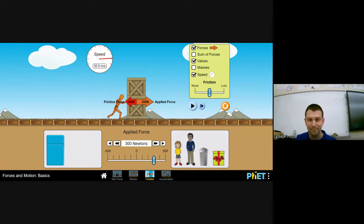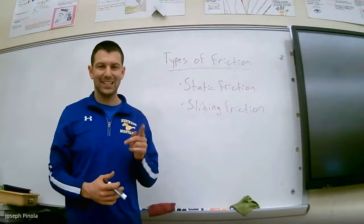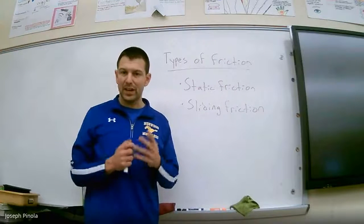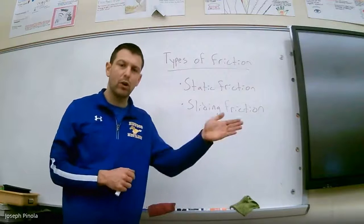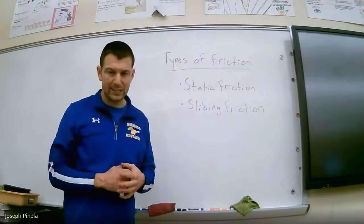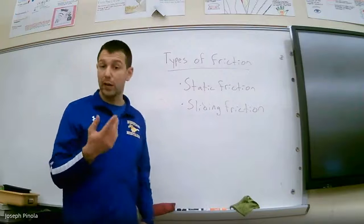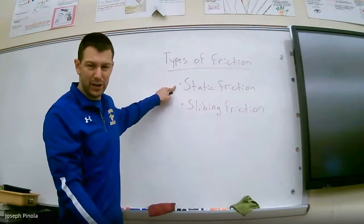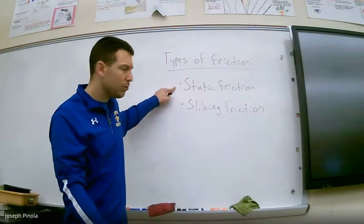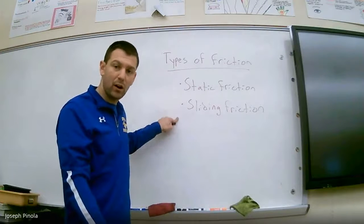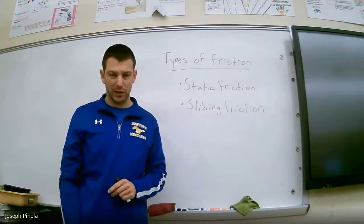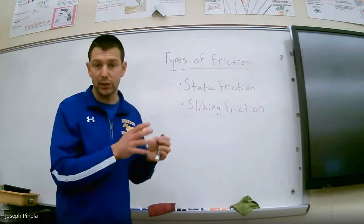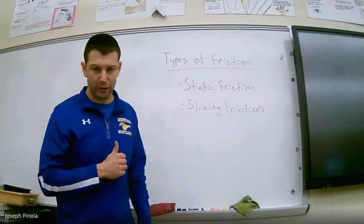Sliding friction is a type of friction very different from static friction. When you have sliding friction, something is already moving, and sliding friction works against it to slow the object down. Where static friction acts against objects that are not moving but attempting to, sliding friction works against objects that are moving—always in the opposite direction. Once you get something moving, it might be a little easier to move, but there's still sliding friction working against you.